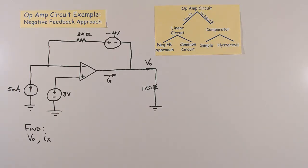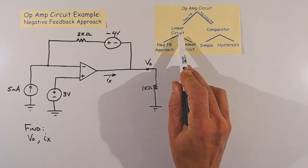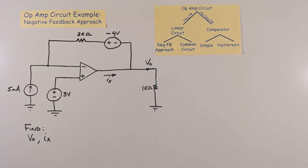So we know this circuit is some kind of linear op-amp circuit. Then we ask, do we recognize the circuit as a common op-amp circuit, like an inverting amplifier or non-inverting amplifier?